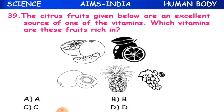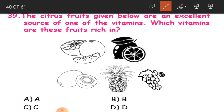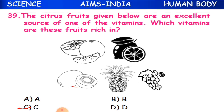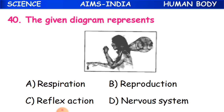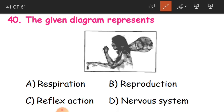Question 39: The citrus fruits given below are an excellent source of one of the vitamins. Which vitamin are these fruits rich in? The citrus fruits shown - oranges, lemon, pineapple, grape - are rich in Vitamin C. Option C is correct. Eating good amounts of Vitamin C prevents scurvy disease.